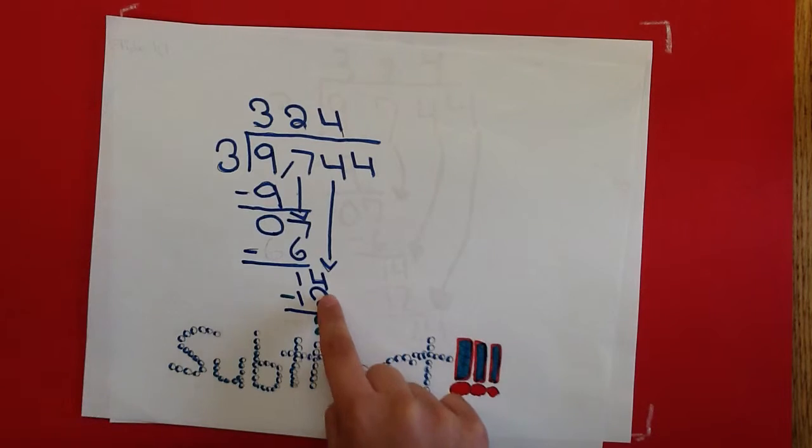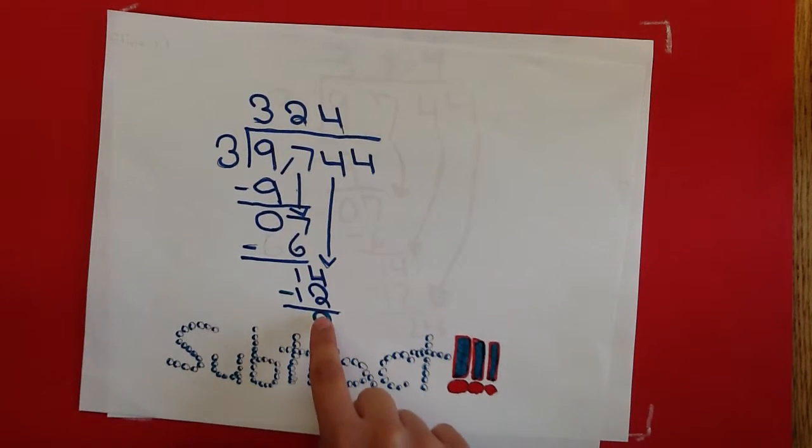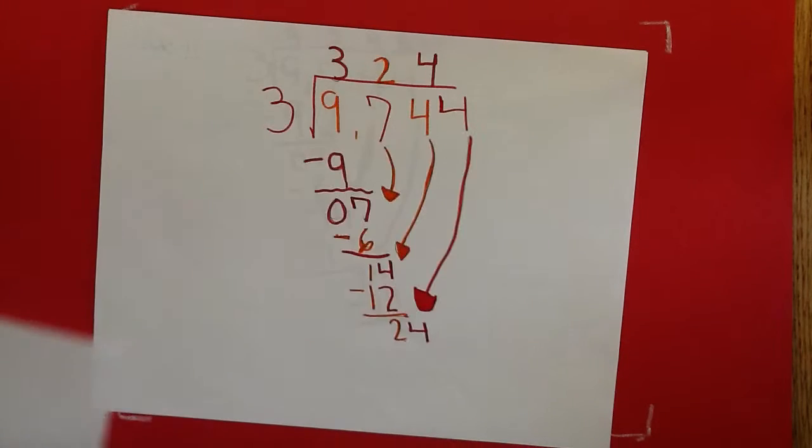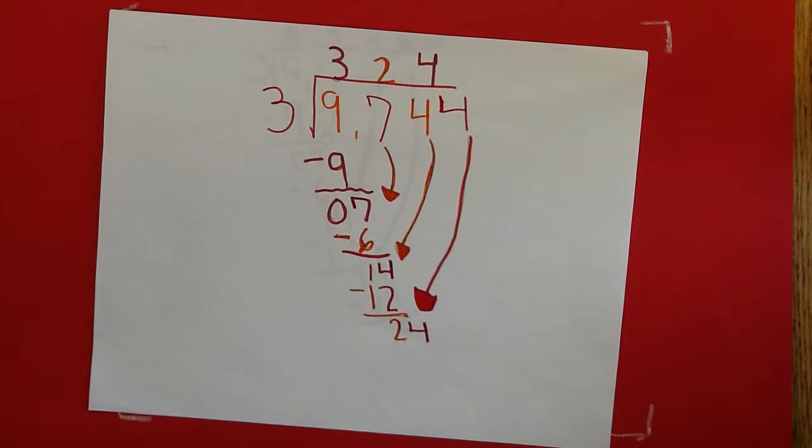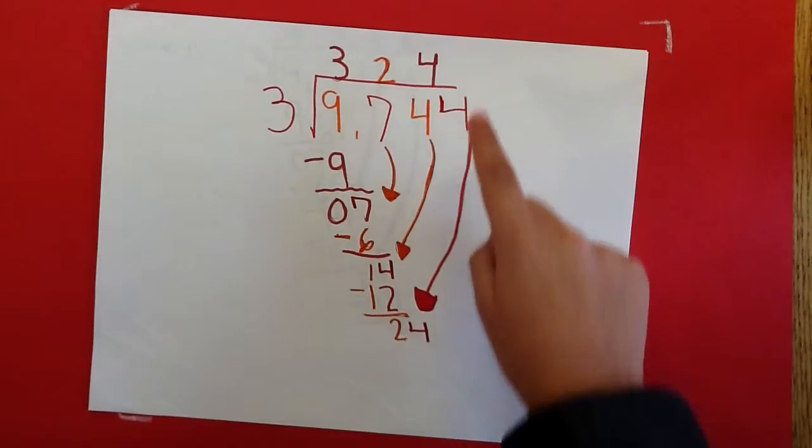Subtract 12 from 14. The answer is 2. Write it down. Bring down the 4 and put it next to the 2.